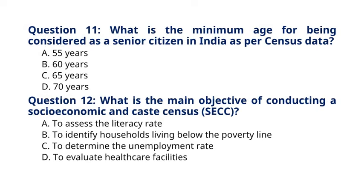Question 11: What is the minimum age for being considered as a senior citizen in India as per census data? A. 55 years. B. 60 years. C. 65 years. D. 70 years. The correct answer to question 11 is option B: 60 years. Explanation: In India, individuals aged 60 years and above are considered senior citizens as per census data.